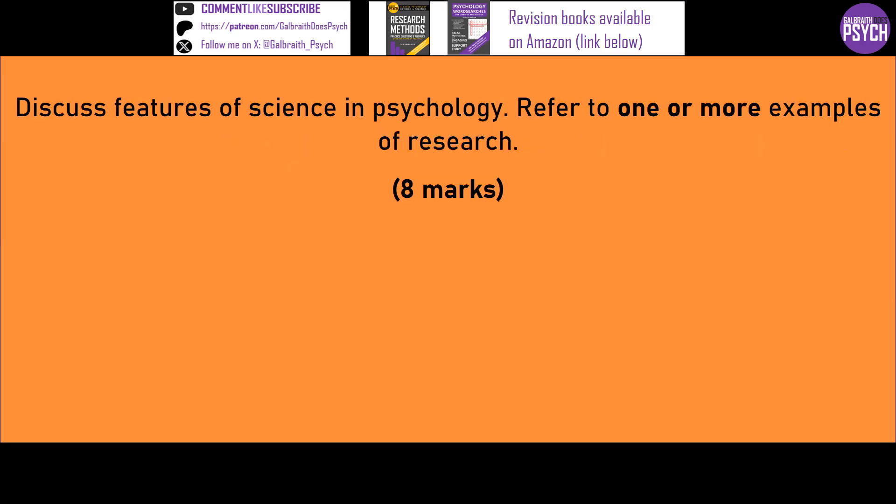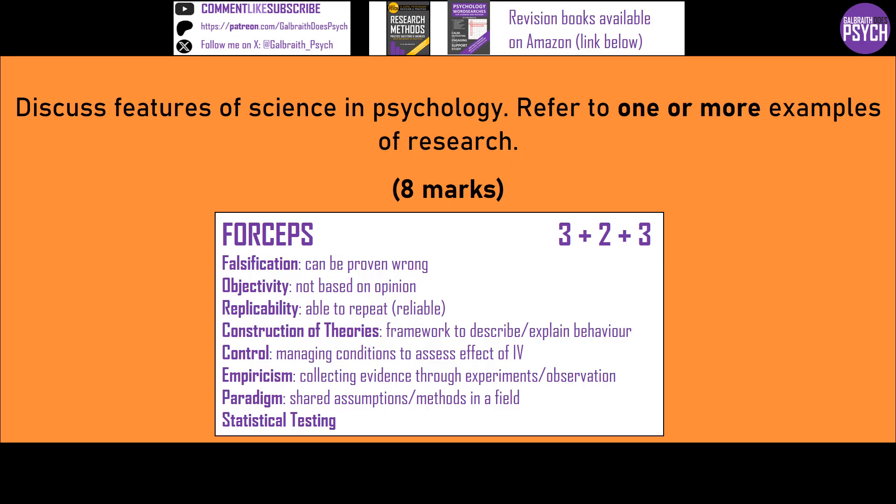Discuss features of science and psychology referring to one or more examples. It says refer to one or more examples, so there's space for application marks — probably three features for three marks, then application marks linking to a study. We've just talked about Milgram, but you could pick whatever study you like. For the discussion marks, you could talk about how important — or indeed not — some of these features are, contrasting more or less scientific approaches. If you're aware of Freud's psychodynamic approach or the humanistic approach, which is much less scientific, you could contrast it and say this isn't the only way to do psychology and it still has value.